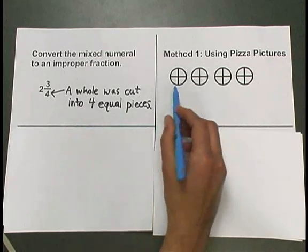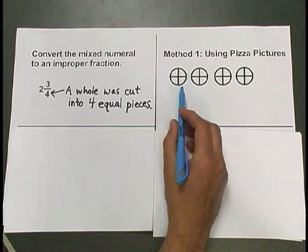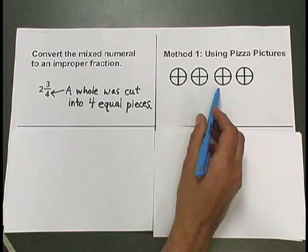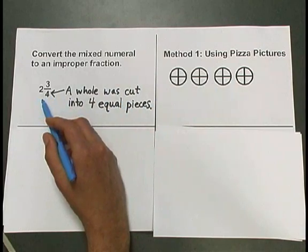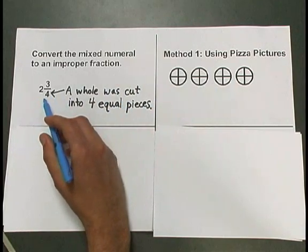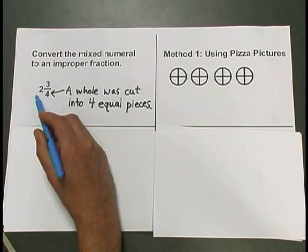We want to shade here. I'm going to shade with my highlighter exactly how much pizza is represented by 2 and 3 fourths. The 2 in front, the whole number, tells me that I should shade 2 whole pizzas.